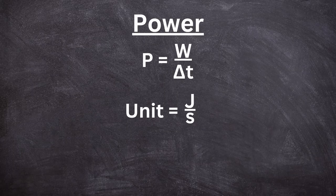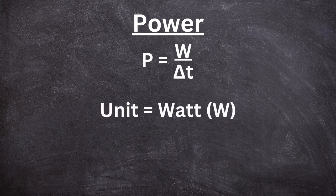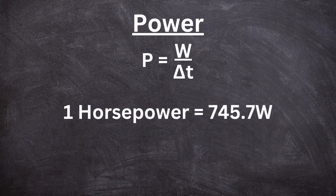Power is work divided by time — it's the amount of work done divided by the amount of time it took to do that work. Power essentially calculates how much work is being done per second, so its unit is joules per second. However, it has a special unit called the watt, characterized by a capital W.